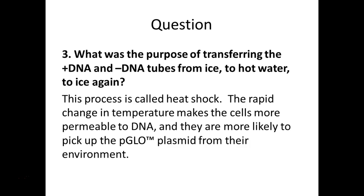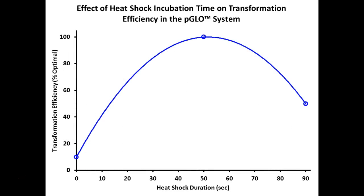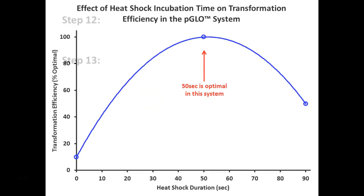The cells are already competent — we're encouraging them to transform and take in the DNA. The heat shock makes them more permeable and more likely to take in DNA. The timing of 50 seconds has been optimized: they've determined that 50 seconds gives the largest number of transformed cells. Go past that and you get fewer — too much heat for too long. Don't do it long enough and you also get fewer. Fifty seconds is the sweet spot. It doesn't have to be perfect, but don't go too far in either direction.